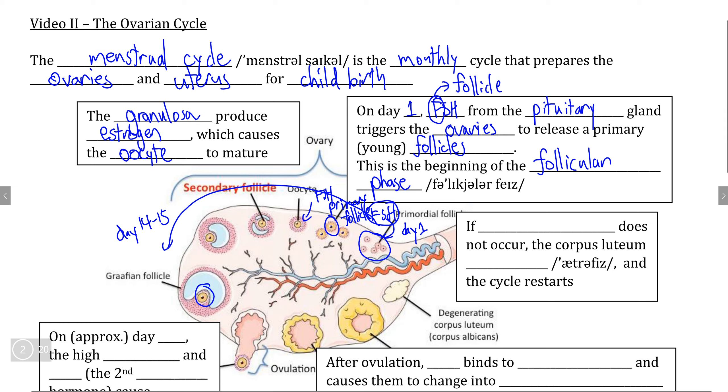As we'll look at in the next video, estrogen is also an important regulatory hormone because the more estrogen that the granulosa produce, the more it is able to enter the bloodstream and migrate all the way back up to the brain, specifically to the regulatory center, the hypothalamus. When it does this,